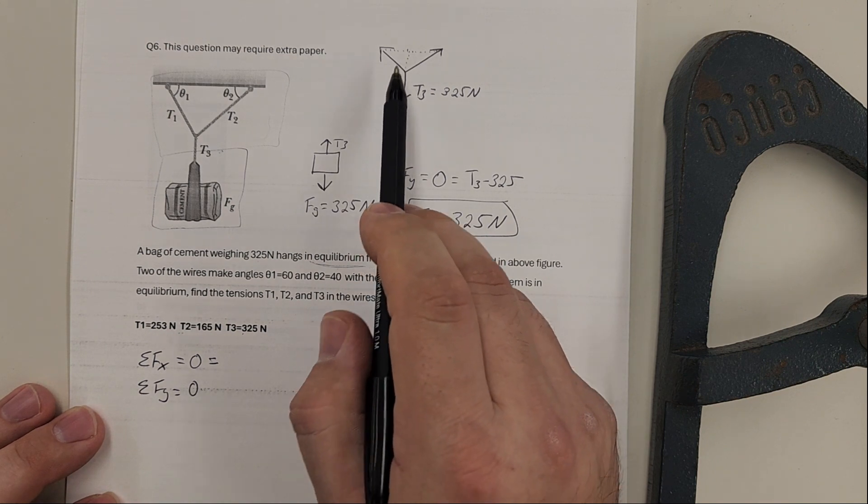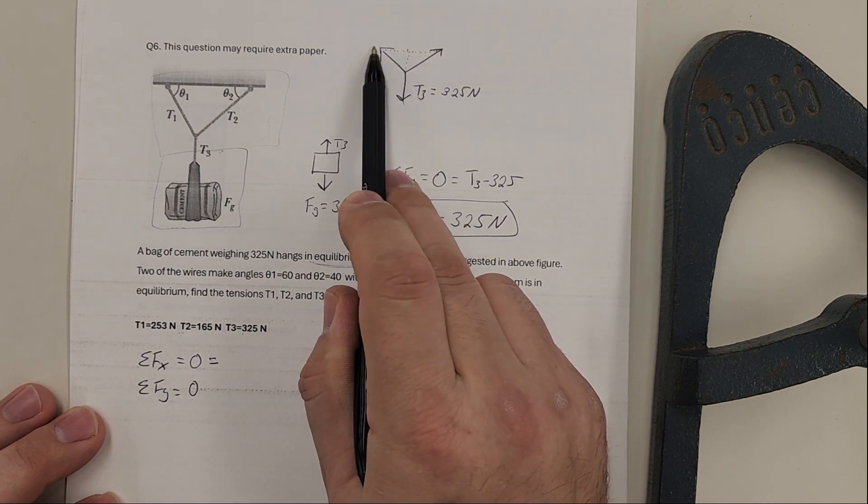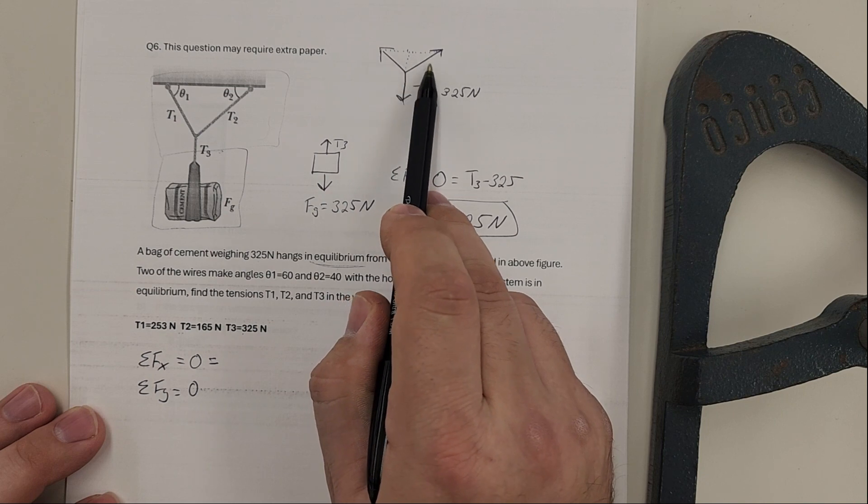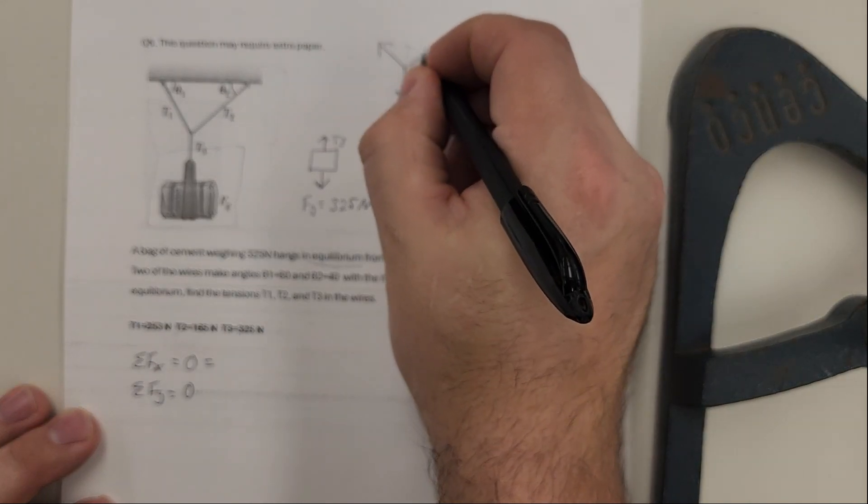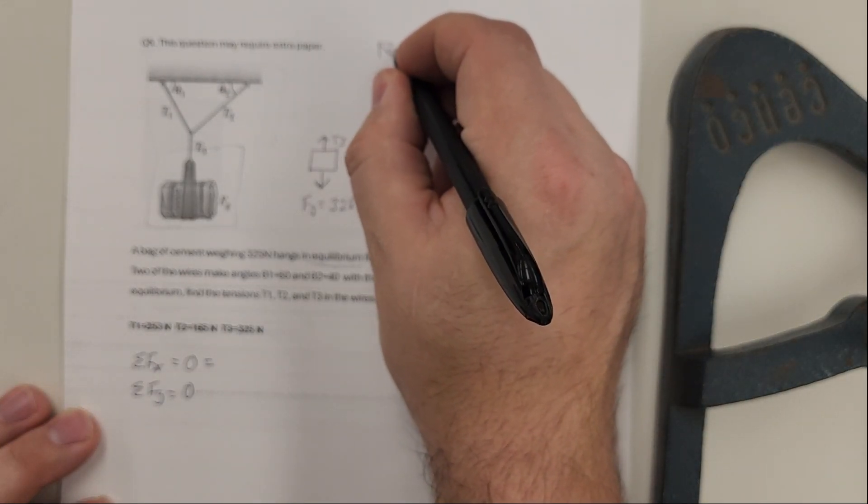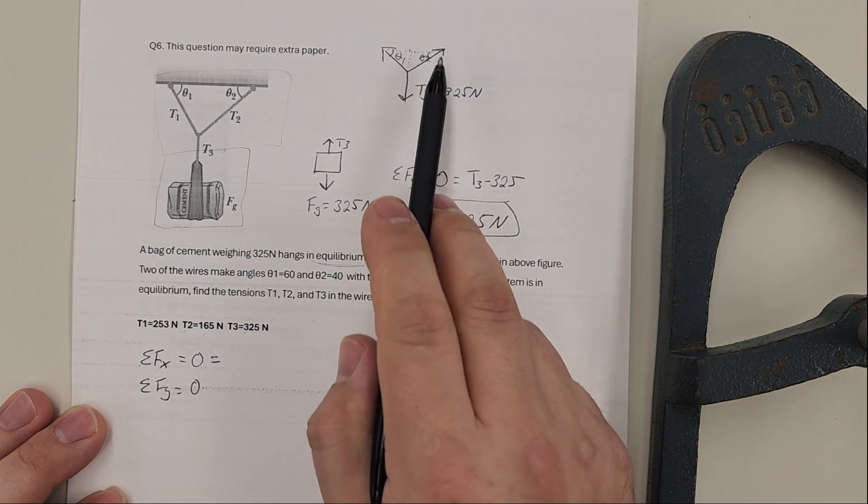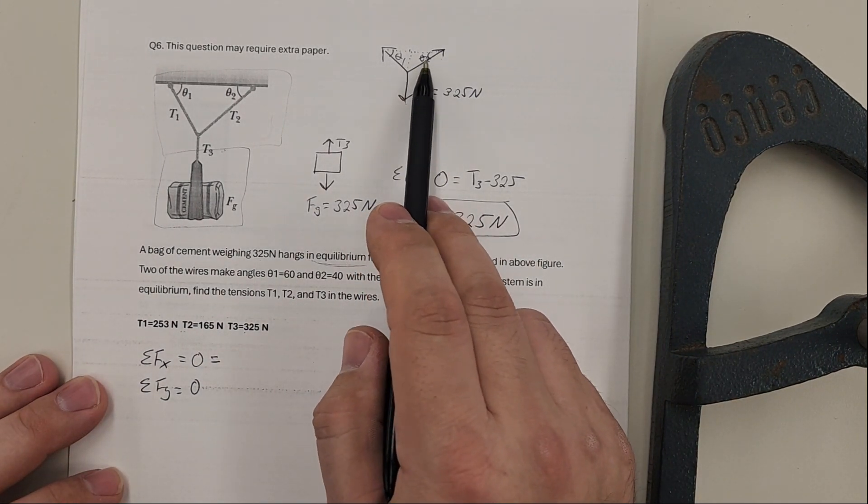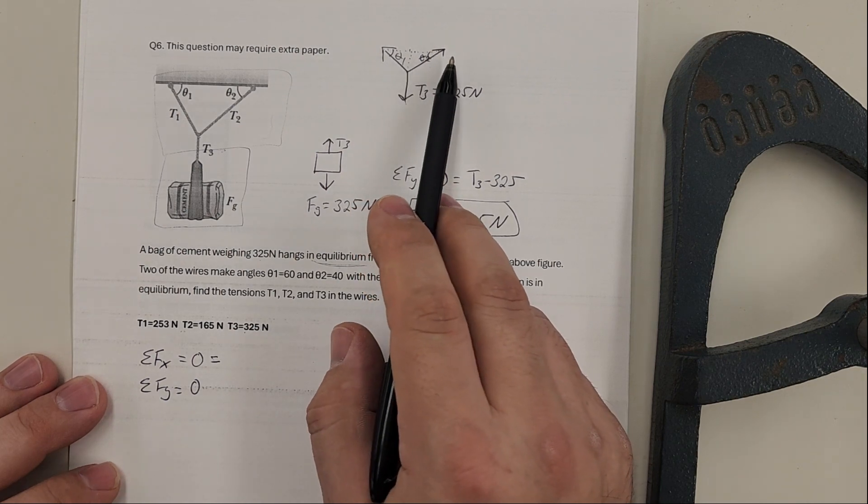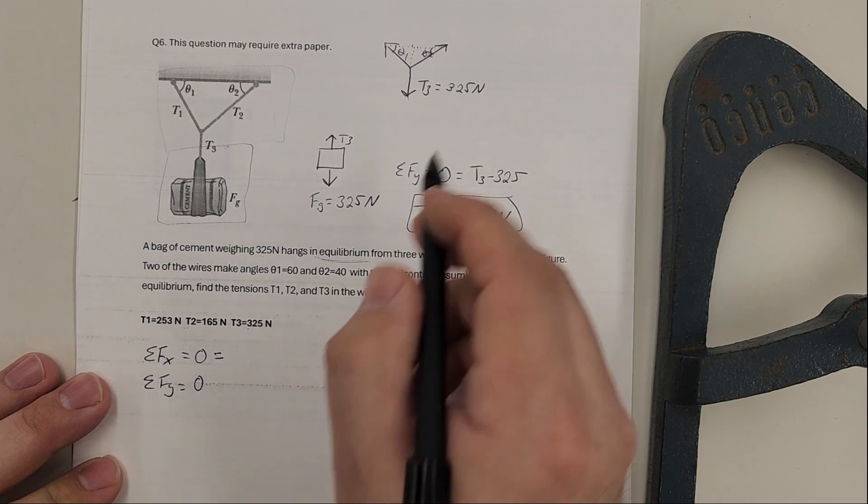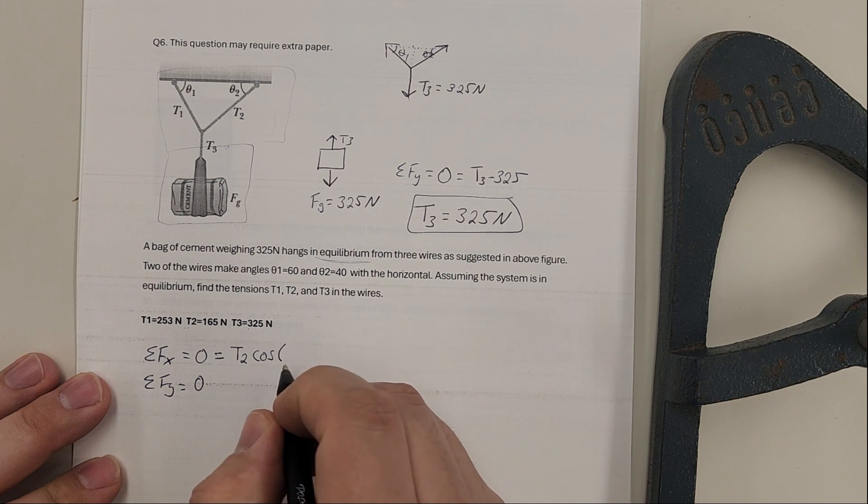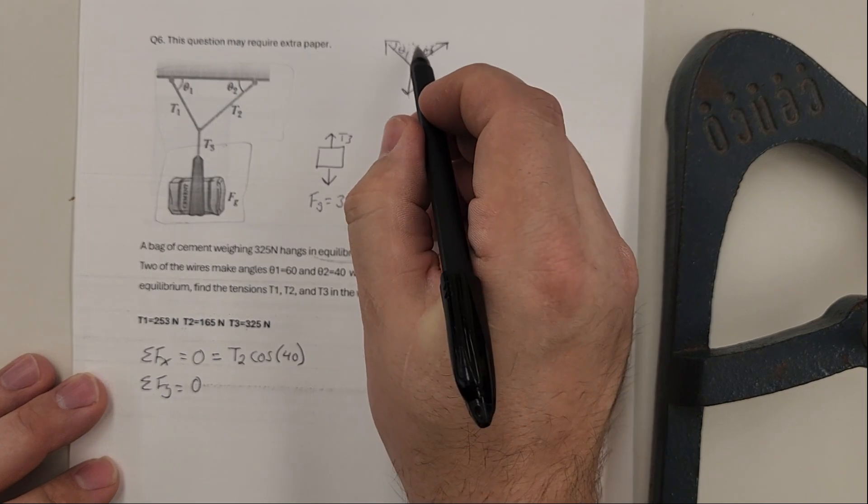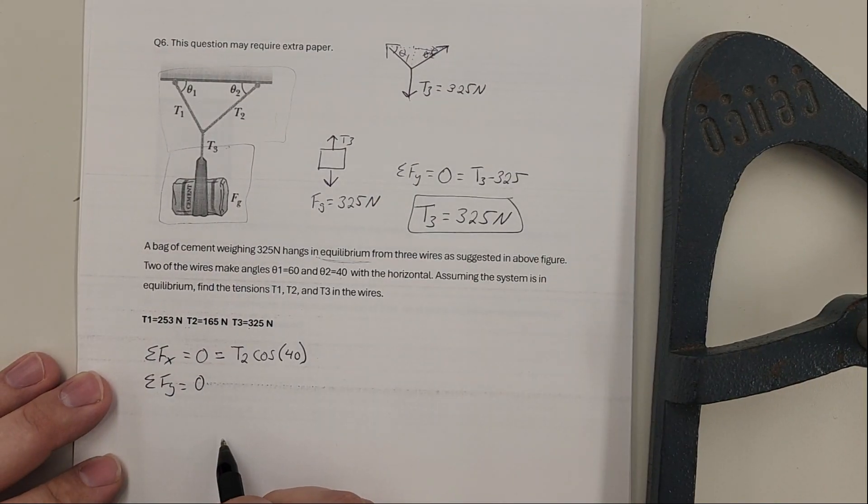If I look at what is made up of the sum of the forces in the x, T3 points down, so I don't care about that. T1 will have an x component in the negative direction, T2 will have an x component in the positive direction. The x component of T2 would be the hypotenuse, this is adjacent, so it would be the cosine of the angle. For the x component, I'm going to have T2 cosine of theta 2, which is 40 degrees.